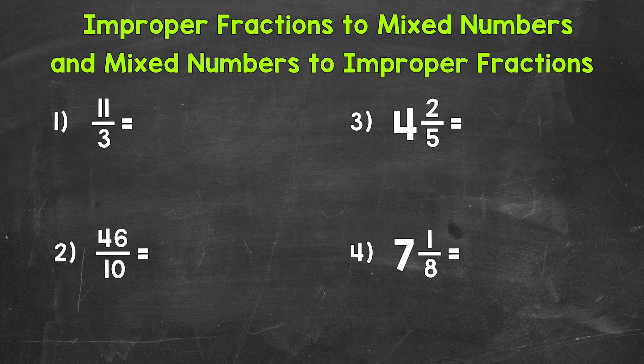Now when converting between these, keep in mind that they are always going to be equivalent. For example, if we convert a mixed number to an improper fraction, both the mixed number and improper fraction are equivalent. They are just in different forms. Depending on the situation or type of problem, sometimes we want to have improper fractions, and sometimes we want to have mixed numbers. So we need to be able to convert between them.